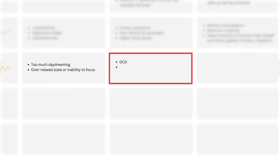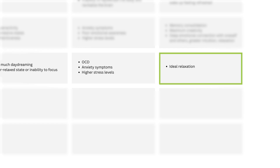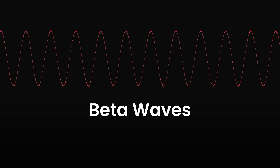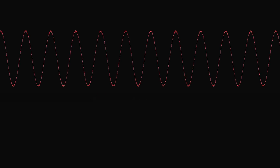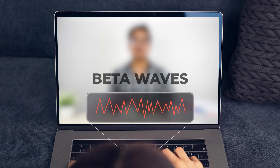Low levels of alpha waves correspond to OCD, anxiety symptoms, and high stress levels. The optimum range corresponds to ideal relaxation. The fourth type of brain waves is beta waves, which occur between 12 Hz to 30 Hz. These waves indicate normal activity in the brain when we are conscious and alert — if you are attentively watching this video right now, you are most likely producing beta waves.